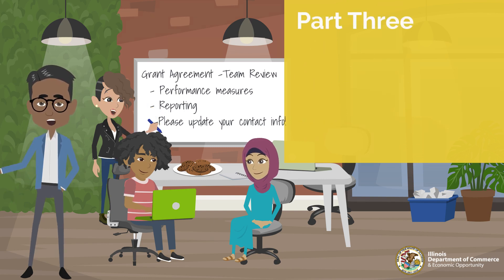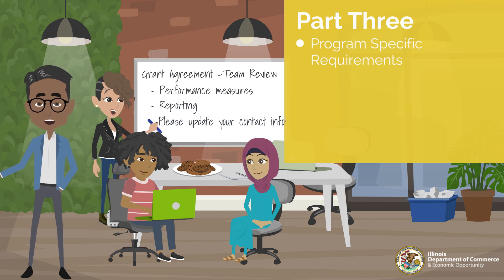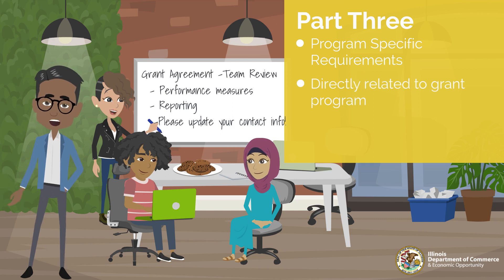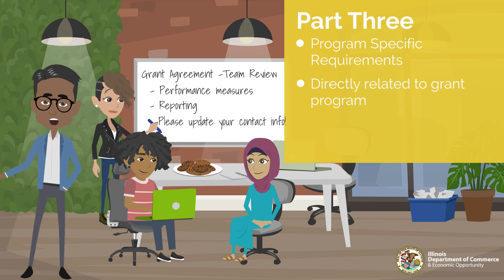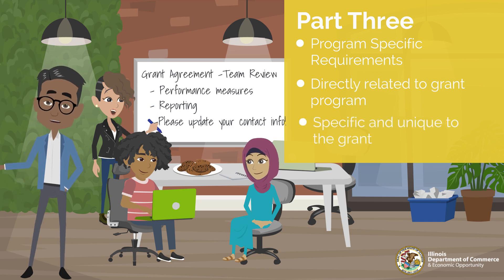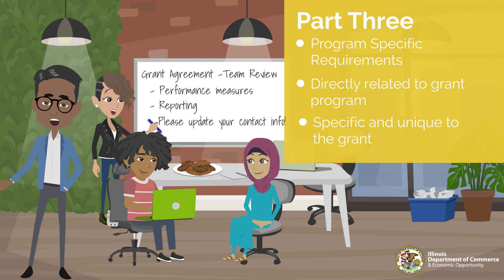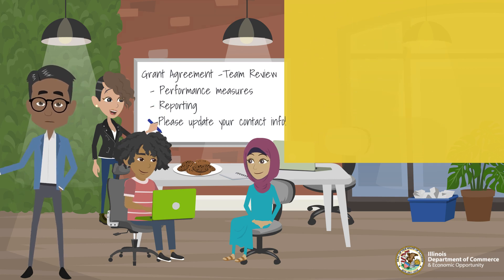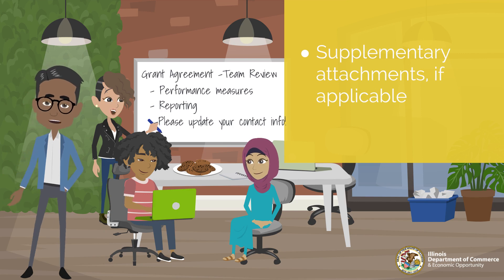Part 3 covers grant or program-specific requirements. This is where you will find details that relate directly to your grant program. In addition to requirements outlined in Parts 1 and 2, this is where your grantor will outline additional requirements specific and unique to the grant. This section should identify all state and federal rules or regulations applicable to the grant or program. Finally, supplementary attachments may accompany your grant agreement, if applicable.